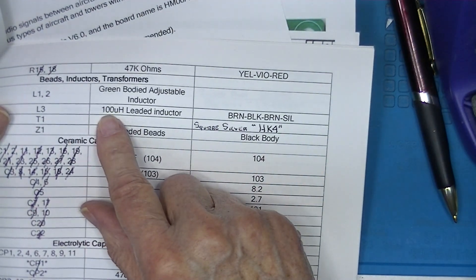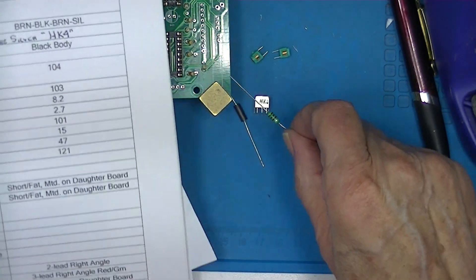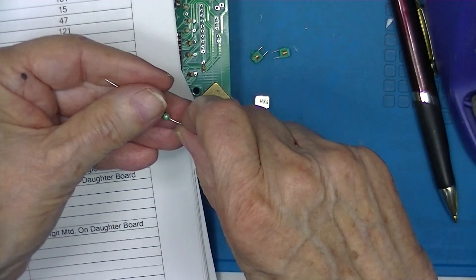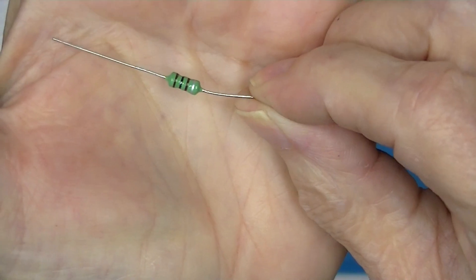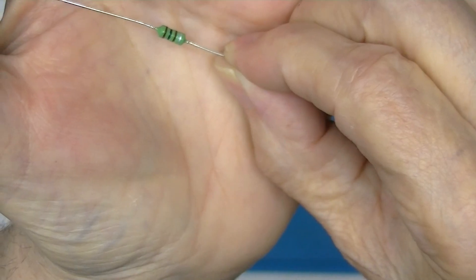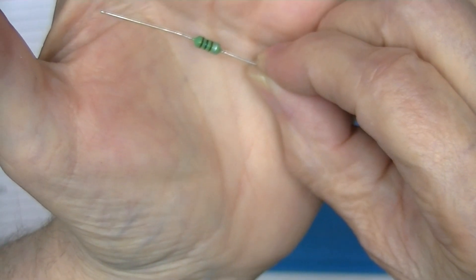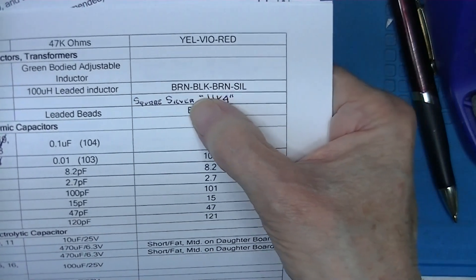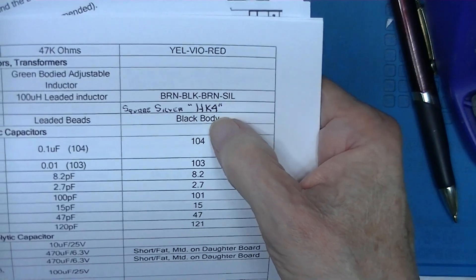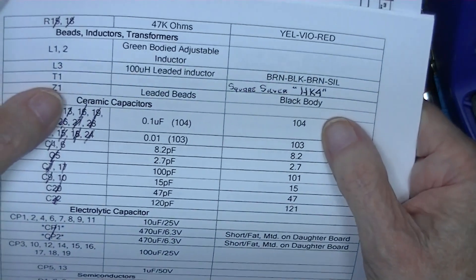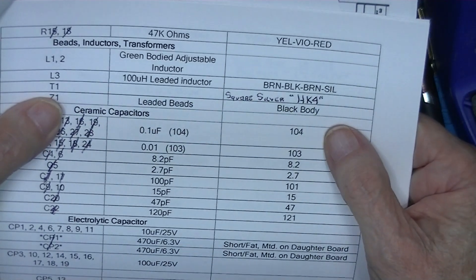L3 is a 100 microhenry leaded inductor and that's this fellow. It looks very much like a resistor, a little bit bigger than the resistors you find in this kit. It's not bigger than all resistors, and it is color coded brown-black-brown with a silver band. T1 is a transformer, 455 kilohertz.